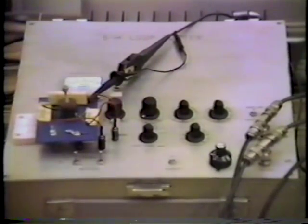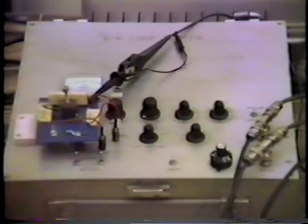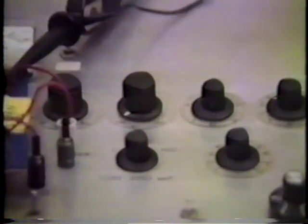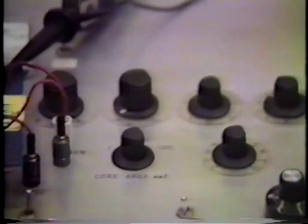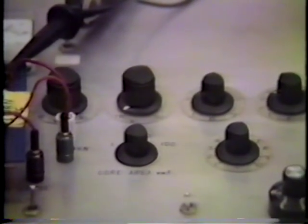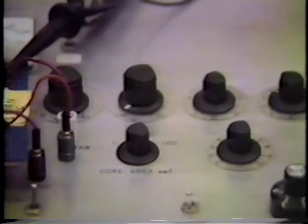Here we dialed 10 millimeter square range, and we dialed 6.3 on this scale, 6.3 on this scale, such that we have actually dialed the core area of this 2213 pot core, which was 63 millimeter squared.